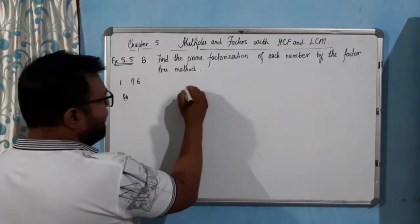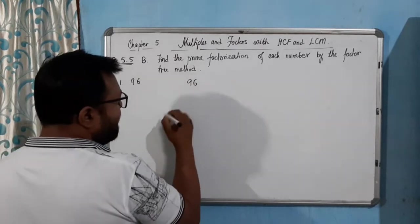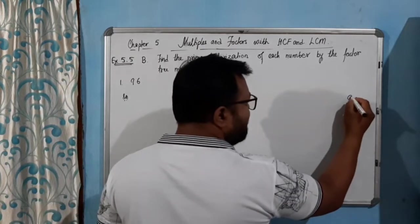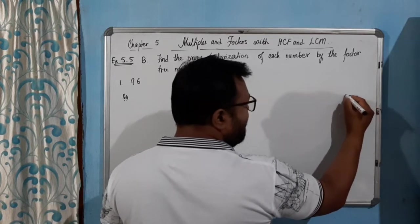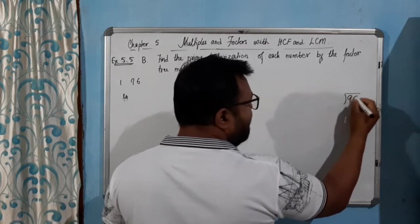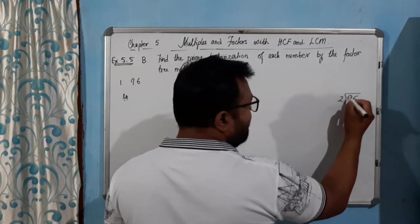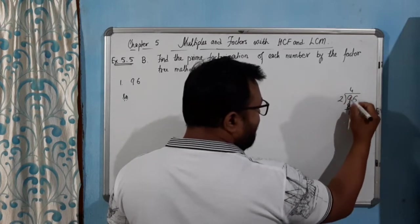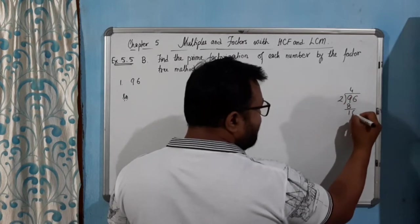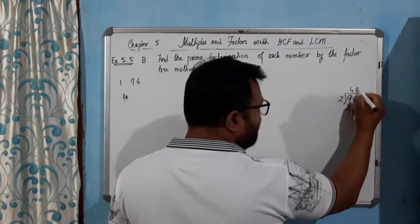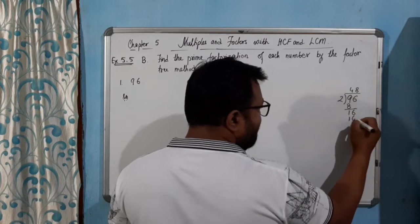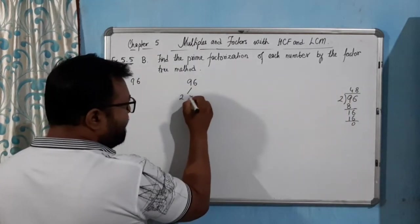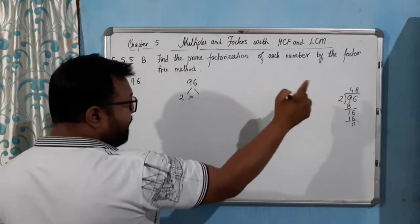First number is 96. Let us divide it by 2 — very simple. See, many of you get confused. You don't know — first divide by the first prime number, which is 2. For 96, you will get 1 here and 6 here, giving 16. So you write 2 into 48.